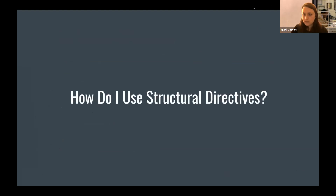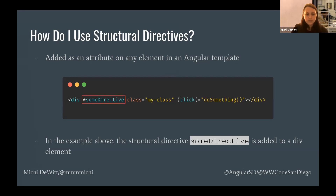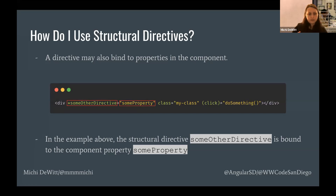How do you use Structural Directives? It's very simple — you add the Structural Directive as an attribute on any element in your Angular template. In this example, we have a directive called 'someDirective.' We can see it clearly because it has that asterisk, so right away we know it's a Structural Directive added to a div element. You can also bind properties to your directives, just like you would bind properties to a custom component or attribute directive.